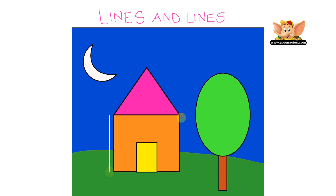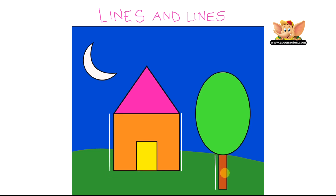Now, these are the standing lines. And if you look at the tree, we have two more standing lines. If you look closely in this picture, I'm sure you can find more standing lines. If you look at the door, you see two more standing lines at the door.